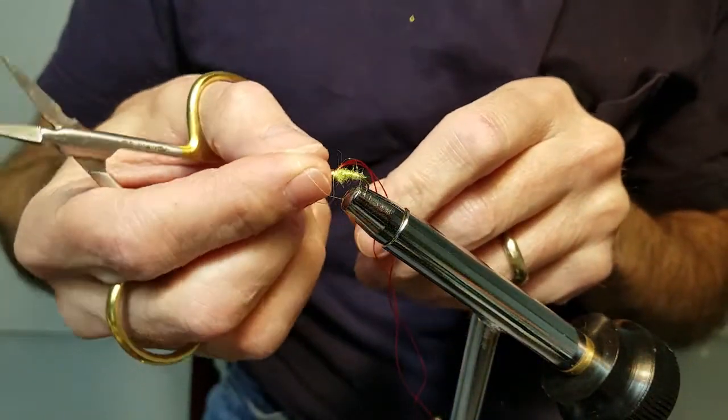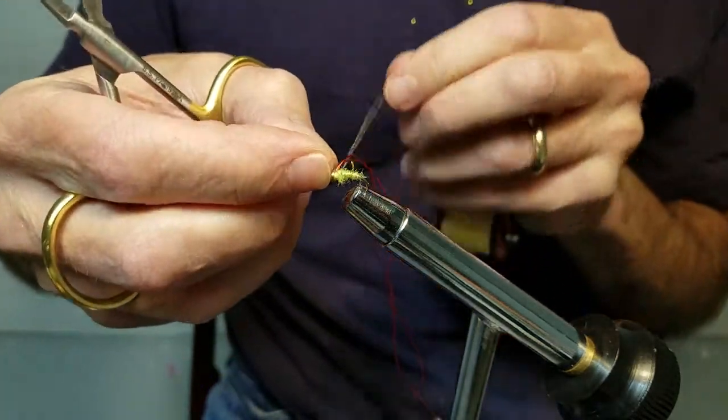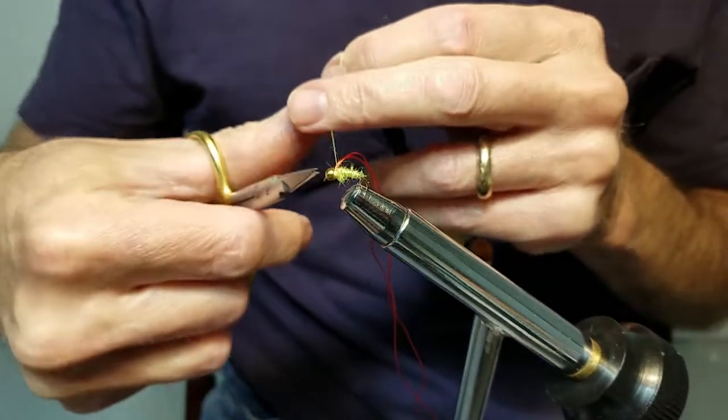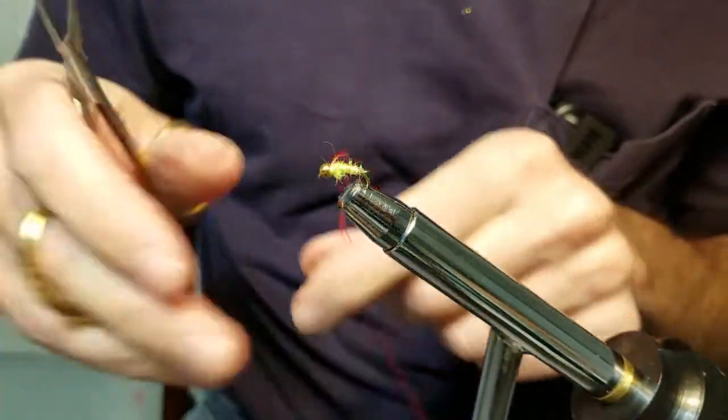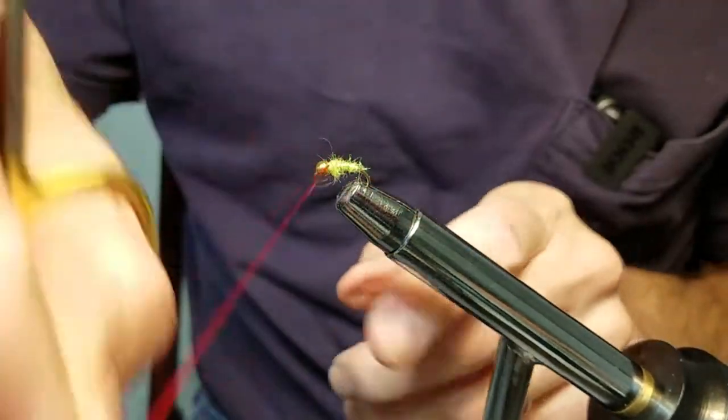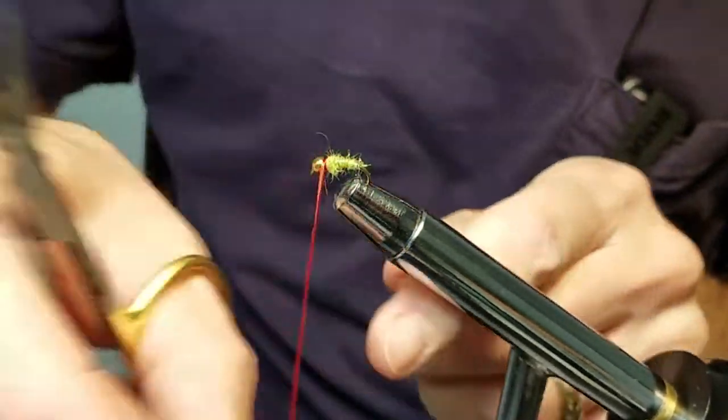Quick couple of half hitches. You could also use a whip finish at this point. I got that secured. Now I don't worry about this too much because it's going to get wrapped with the floss.